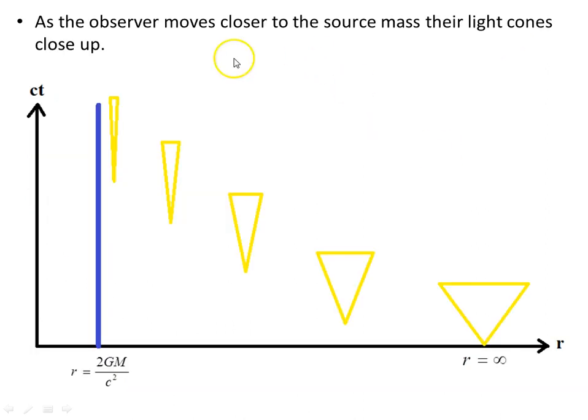Moving on now, we have noticed in a previous video we found that as the observer moves closer to the source mass, their light cones close up. So at infinity, we found that the space there has become flat in the asymptotic sense. The limit as r goes to infinity, this metric goes towards that of the flat metric of Minkowski spacetime.